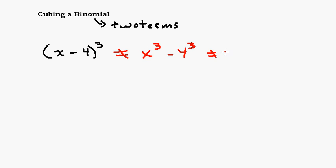That is not what you need to do. The reason is because x minus 4 to the third power means x minus 4 times x minus 4 times x minus 4. That's what to the third power means.